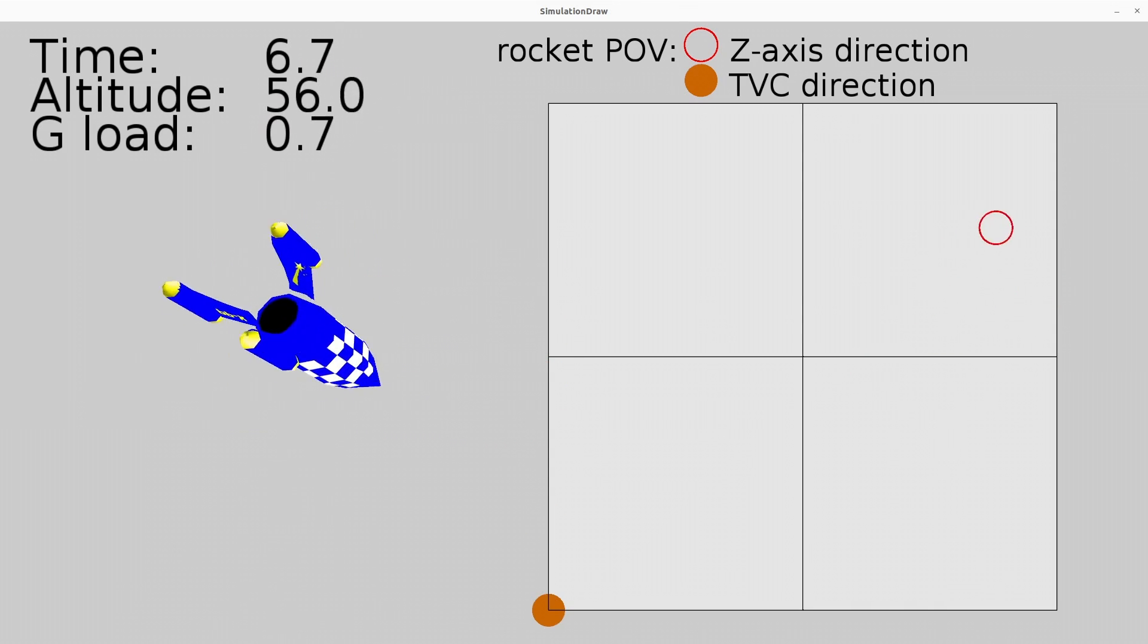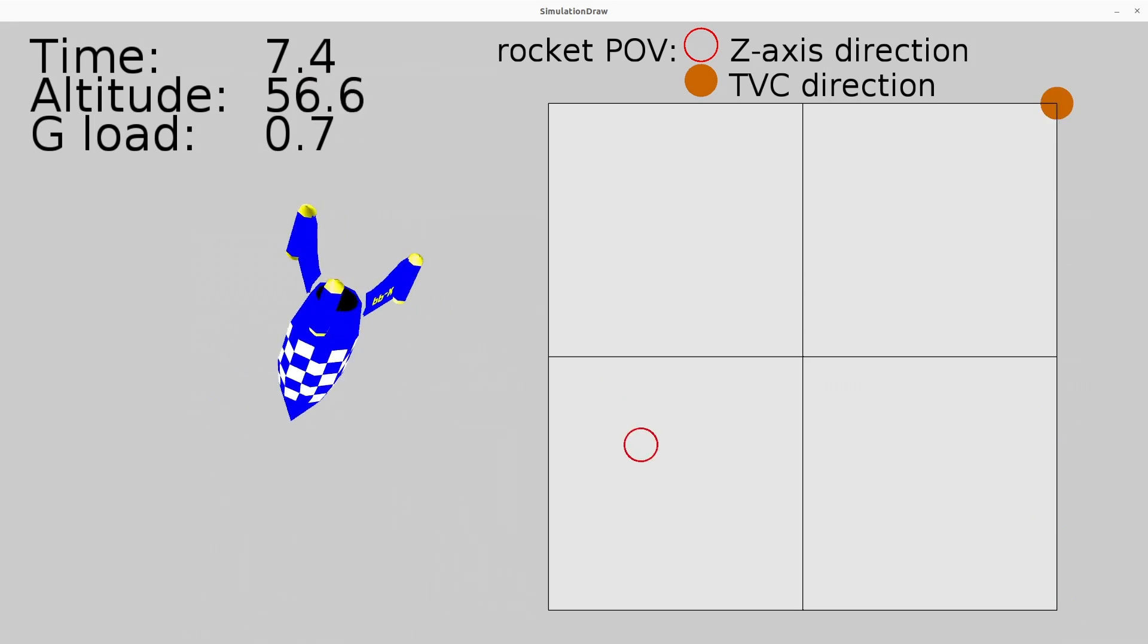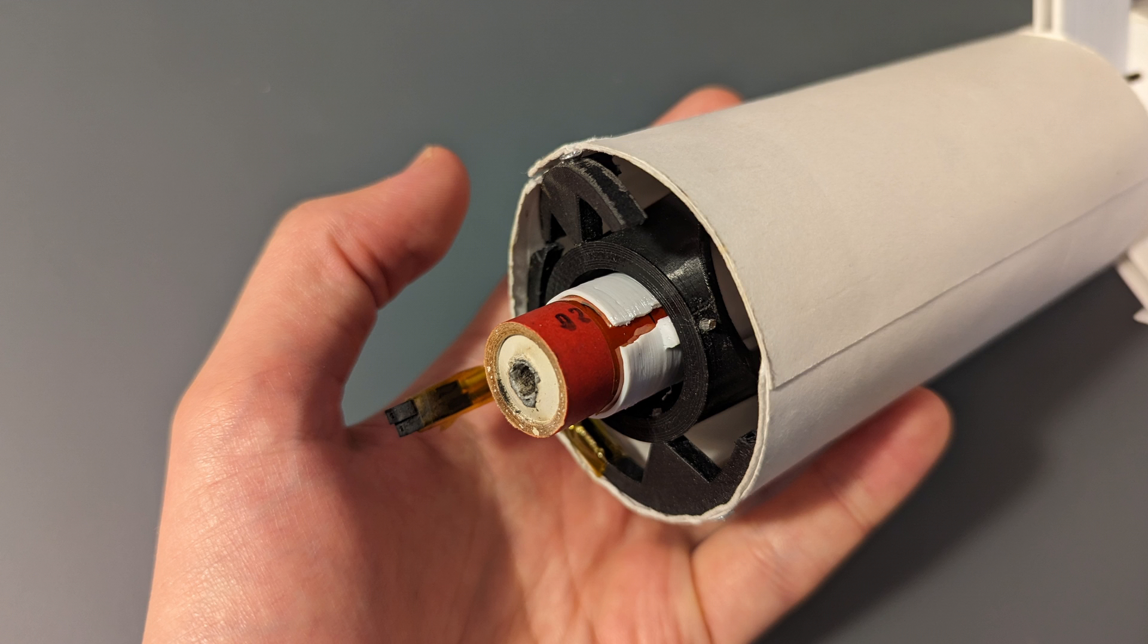After a 55 meter fall and hitting the ground at 15 meters per second, the rocket was heavily damaged. TVC system was completely destroyed. But that's fine. I consider the project completed as I achieved my primary goal. I'm planning to redesign the whole thing in the future and make it lighter and more reliable.